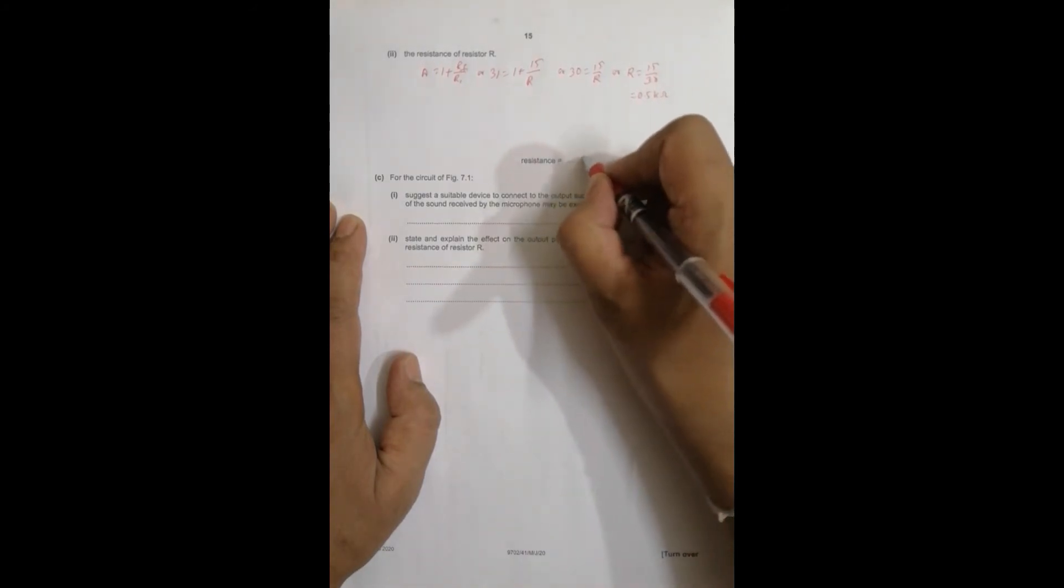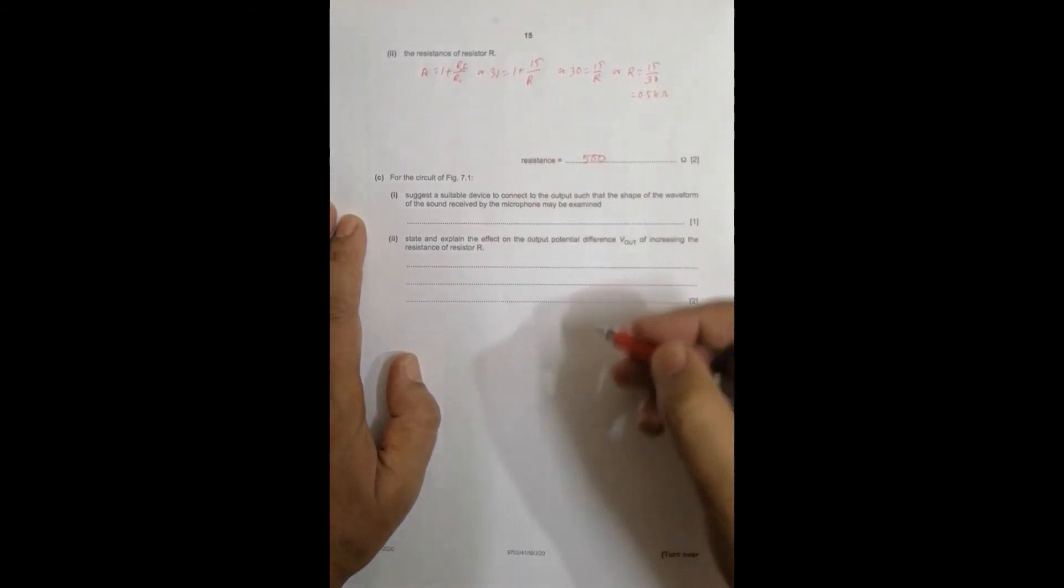So since we have got kilo ohm here, I can write it as 500 ohm. Not most difficult.